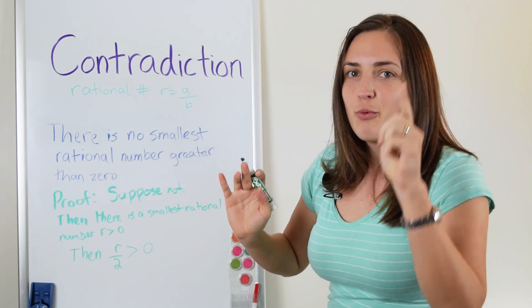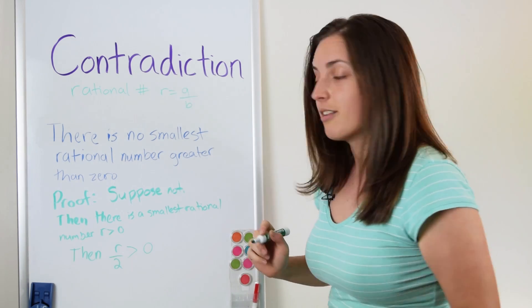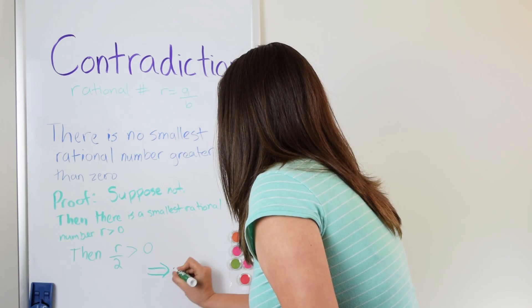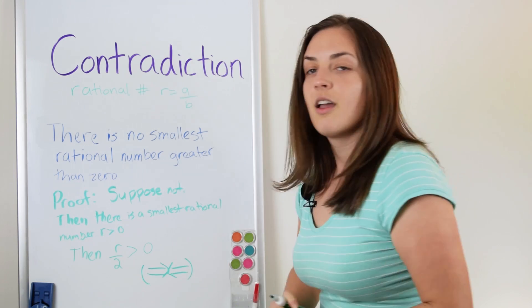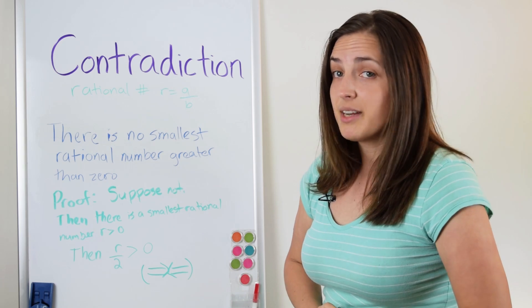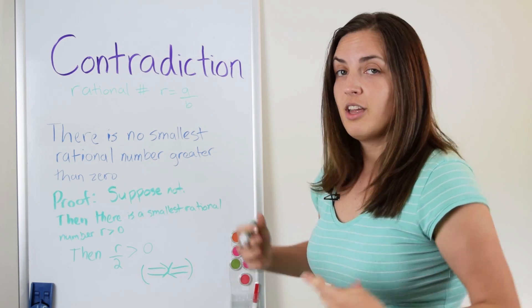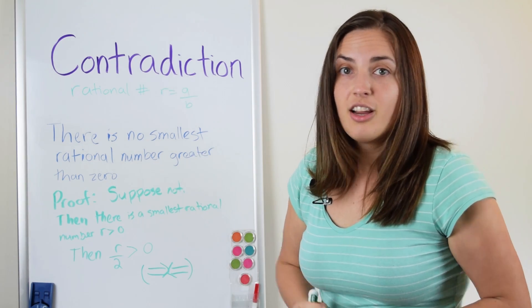What do we do when it's impossible? We say this is a contradiction. Instead of saying this is a contradiction, sometimes we just write this symbol. Two arrows pointing at each other and collapsing.